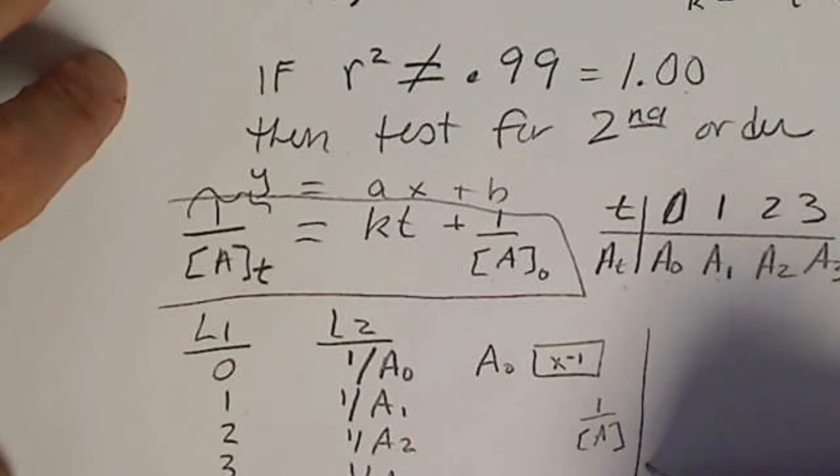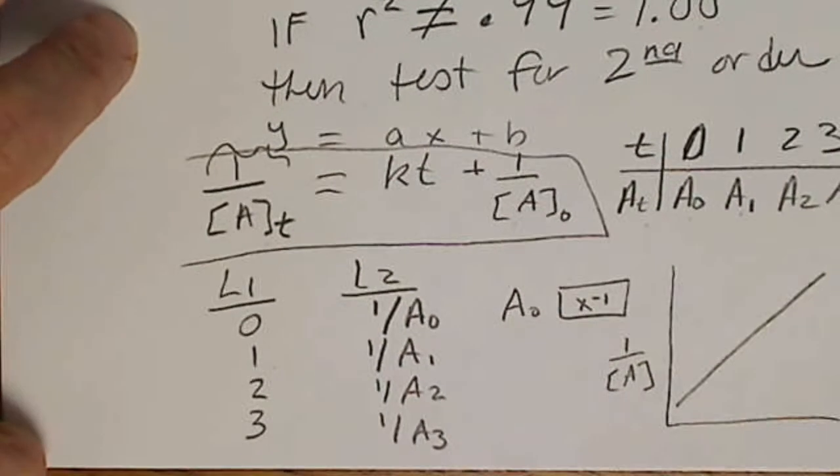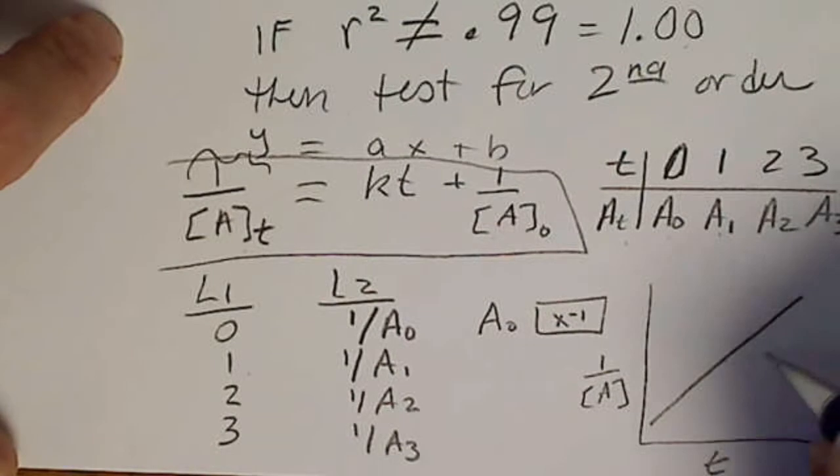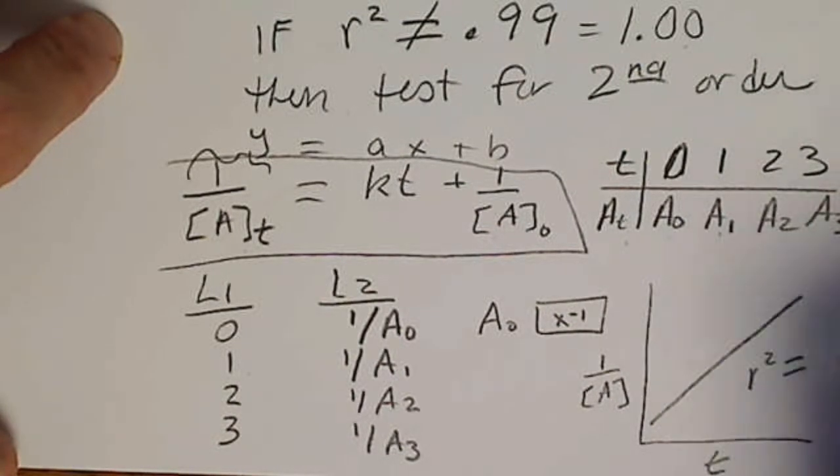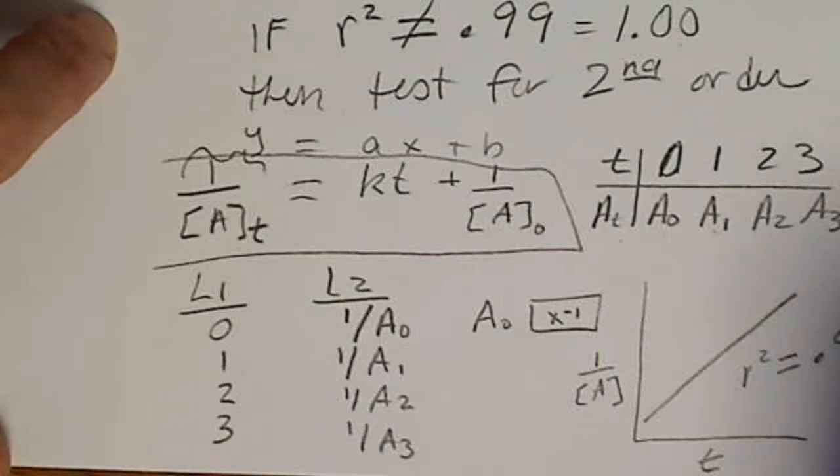So this graph will end up having a positive slope. And the R square value, if it is linear, is going to be at least 0.99.